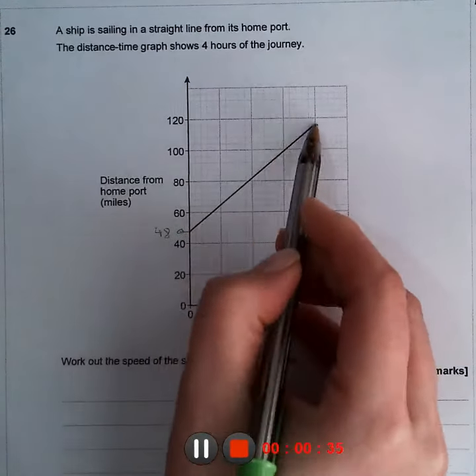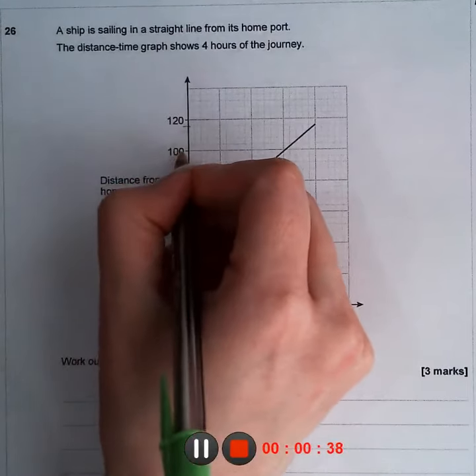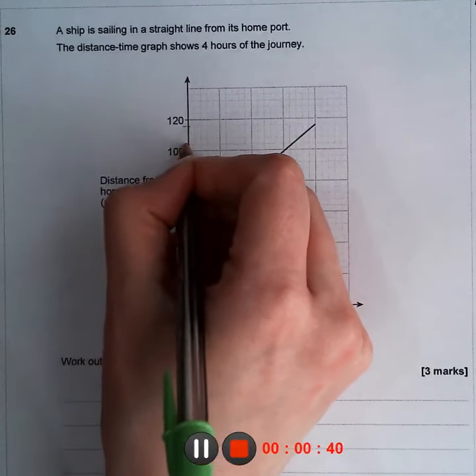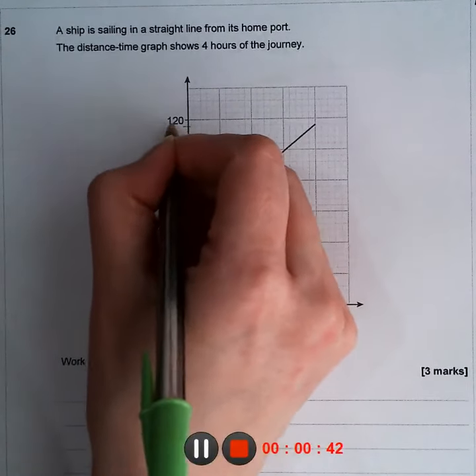Then we get here. We skip by fours: 100, 104, 108, 112, and 116.